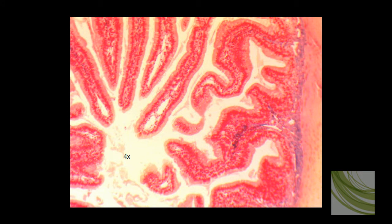This is the second slide we're going to look at, and here we're starting at the 4X objective. This is the lumen, and the simple columnar is along the edges of these villi, and villi are used to increase surface area.